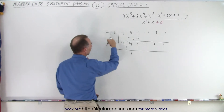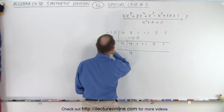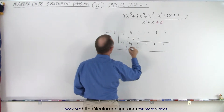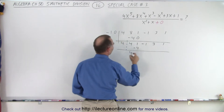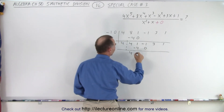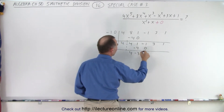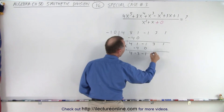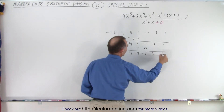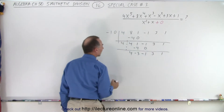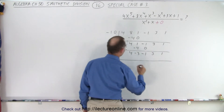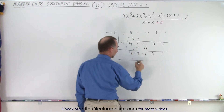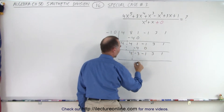Now we drop down the next number which is a 4 again. We do the same thing: negative 1 times 4 would be negative 4, and 0 times 4 is 0. Add the numbers together — minus 3, minus 1 — drop those numbers down, 3 and 1, and again we draw a line. We drop down the next number, negative 3.